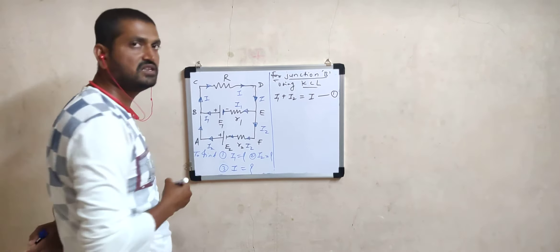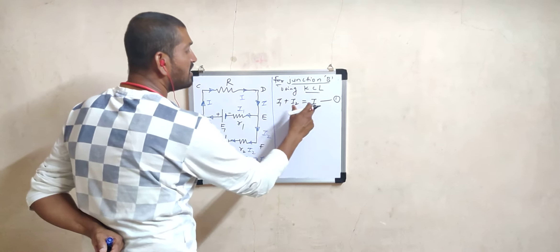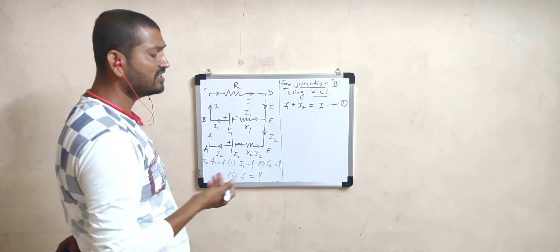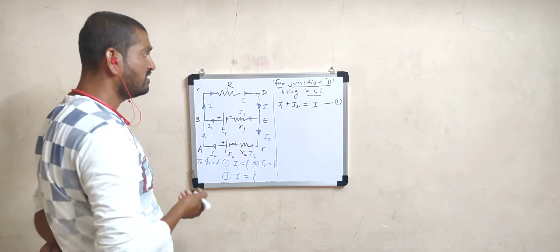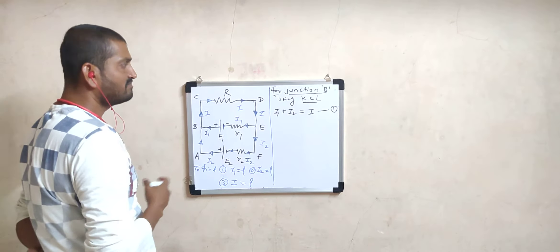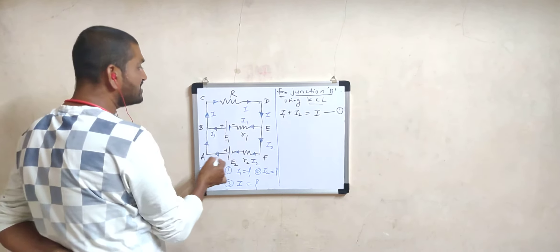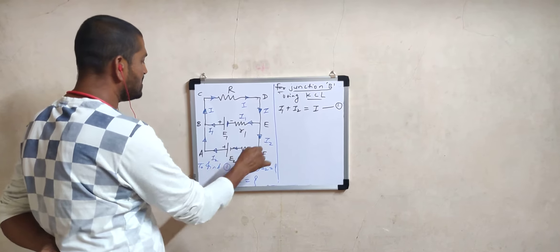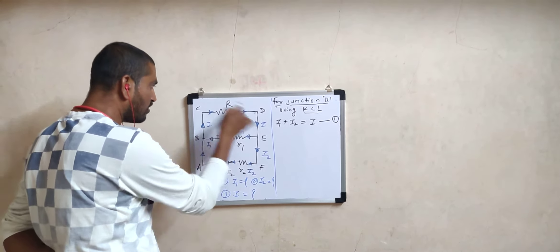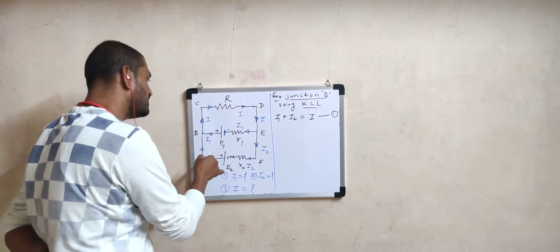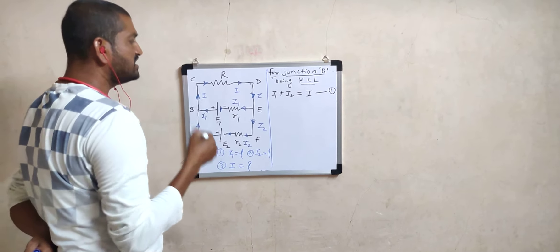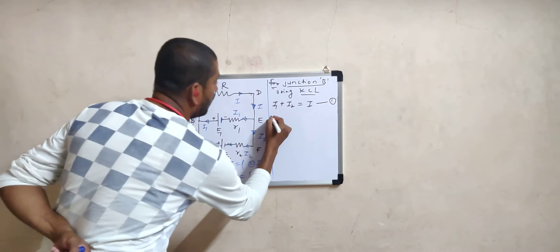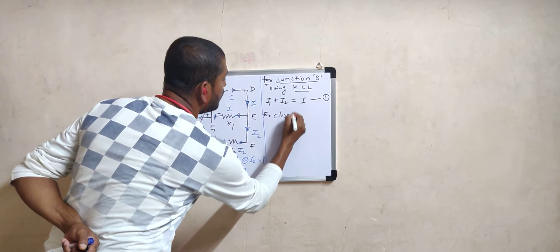In this equation there are three unknowns — I1, I2, and I — so we need two more equations. KVL is applicable for any closed loop, and in this entire circuit there are three possible closed loops: the outer loop A-B-C-D-E-F-A, and two inner loops. We will consider the clockwise direction. For the first analysis, we consider the outer closed loop A-B-C-D-E-F-A using Kirchhoff's voltage law, where sigma E plus sigma IR equals zero.